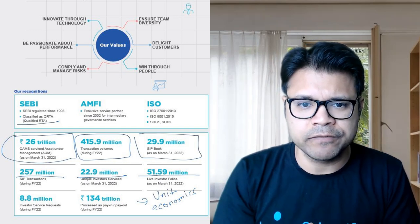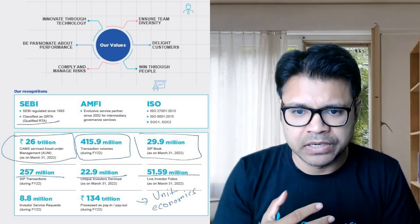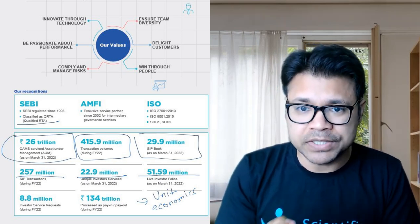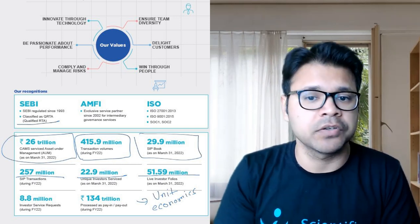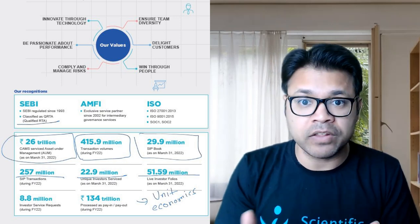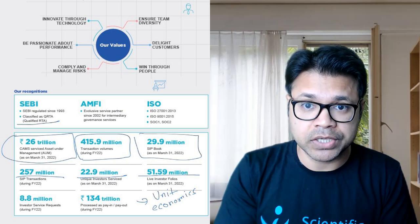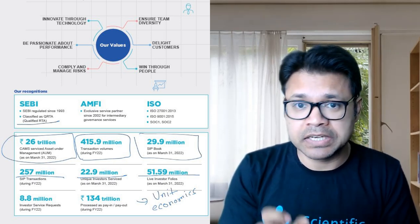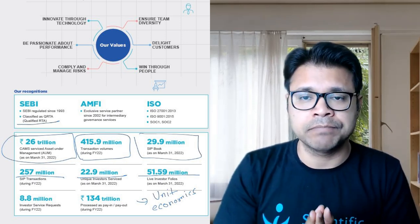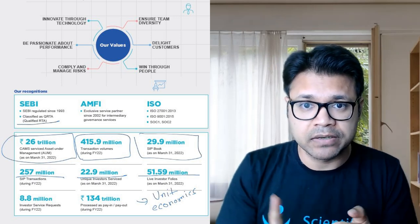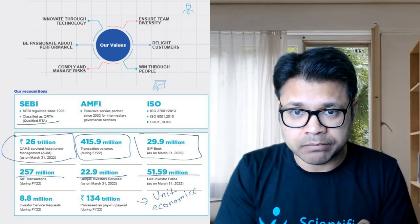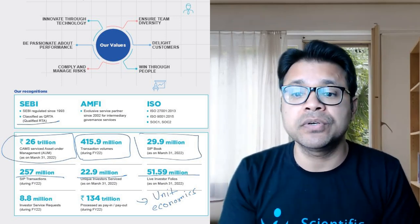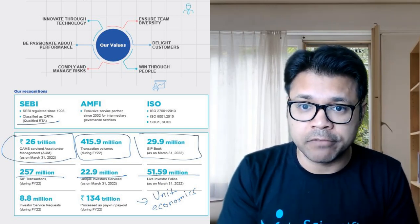On page five you get a lot of transactional information — how many transactions they've processed, how many SIP books they've served, how many unique investors. What's important is these are aggregated numbers. Our effort should be to understand the unit economics: how much money do they make per customer, per transaction, or per 100 crore of average AUM? We don't yet know whether the revenue model depends on transaction count, investor count, or assets under management. Mark this as a key question — understanding unit economics is the crux of any company analysis.